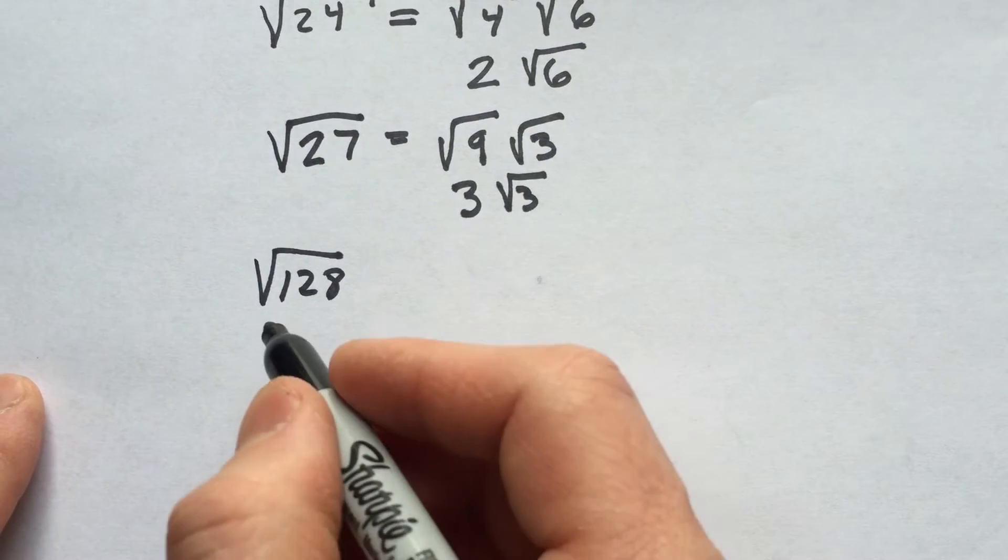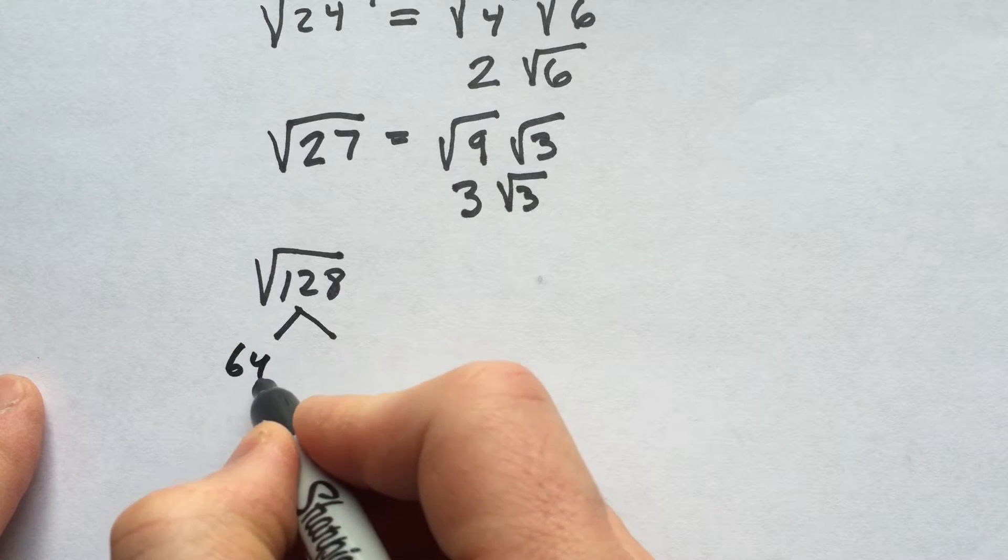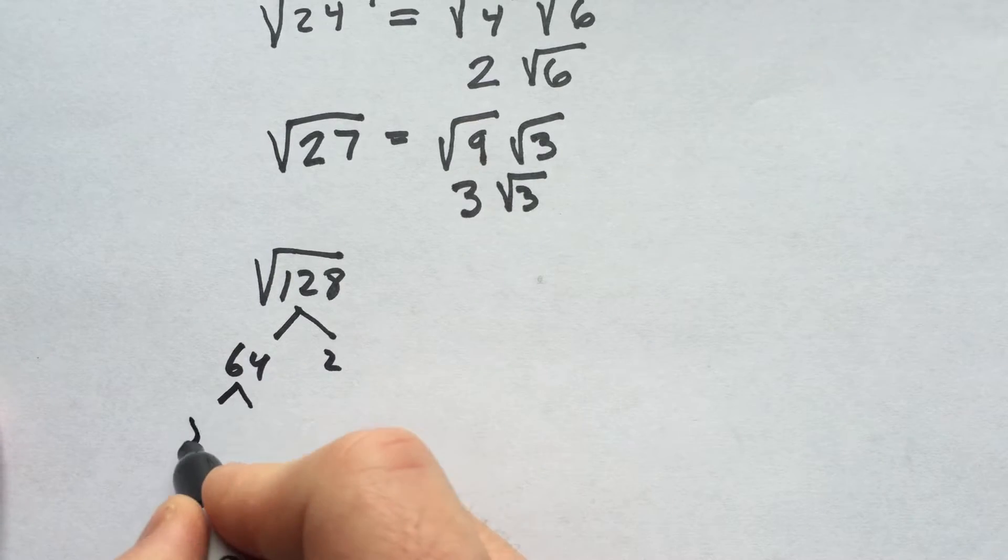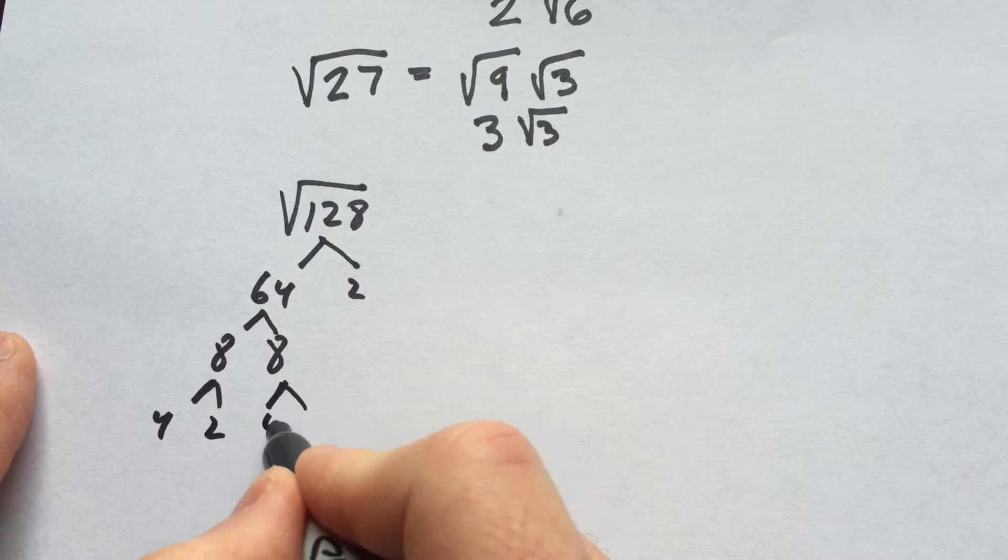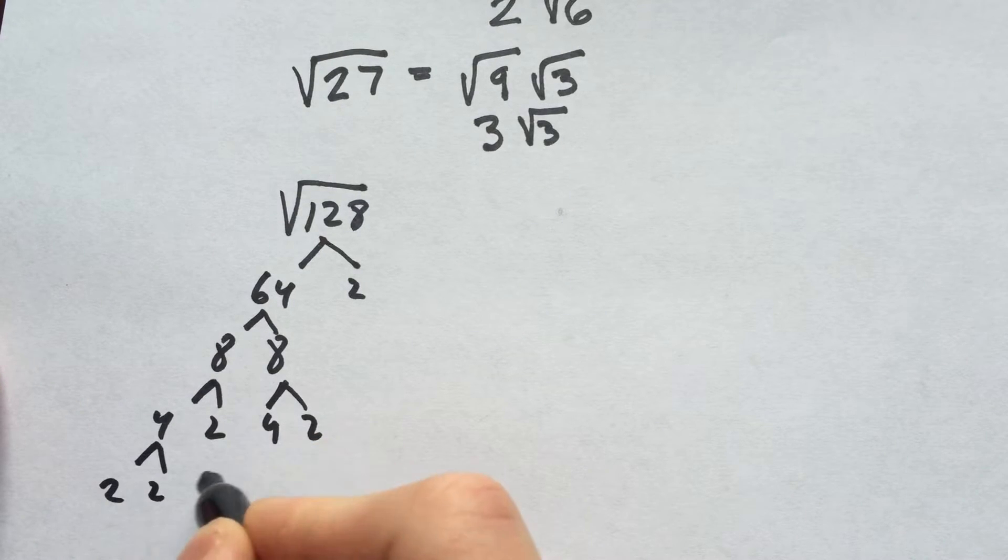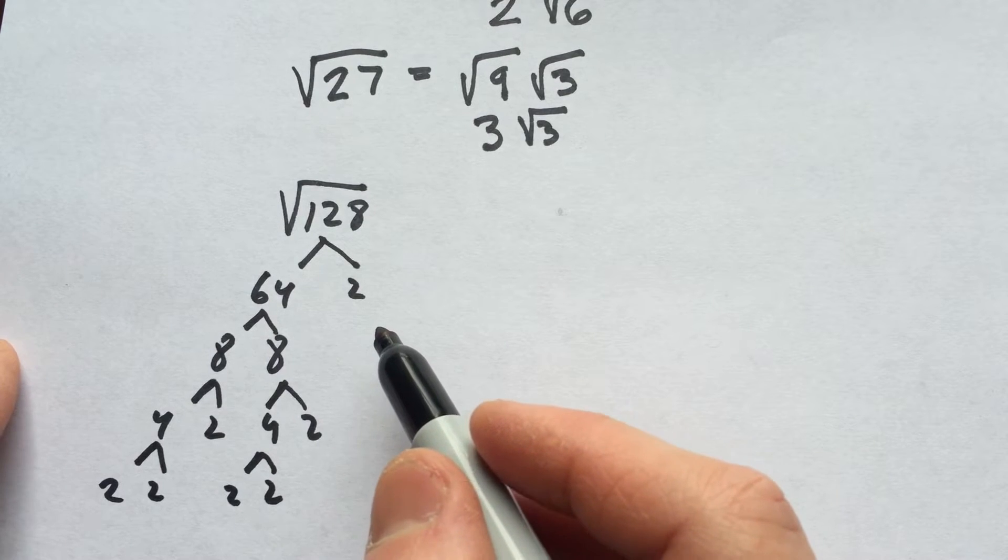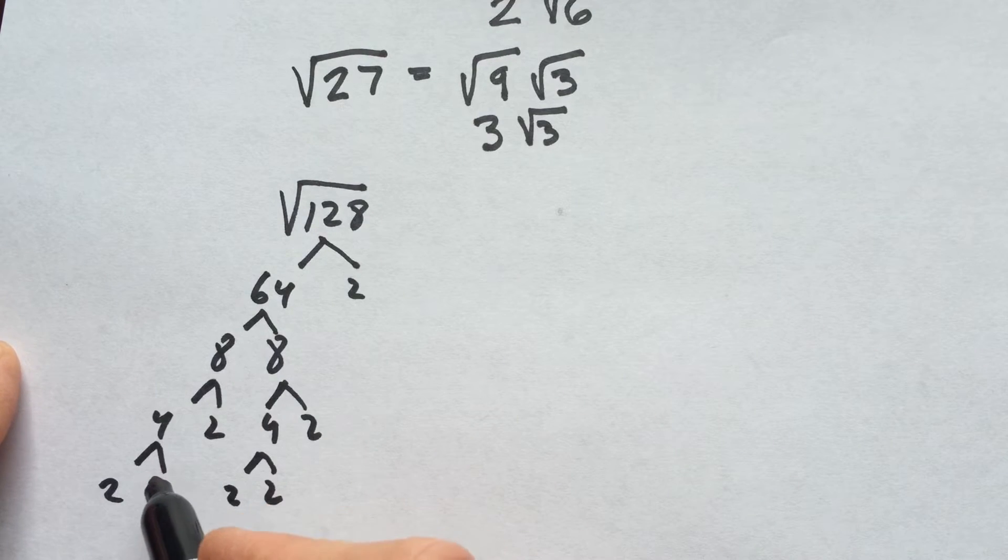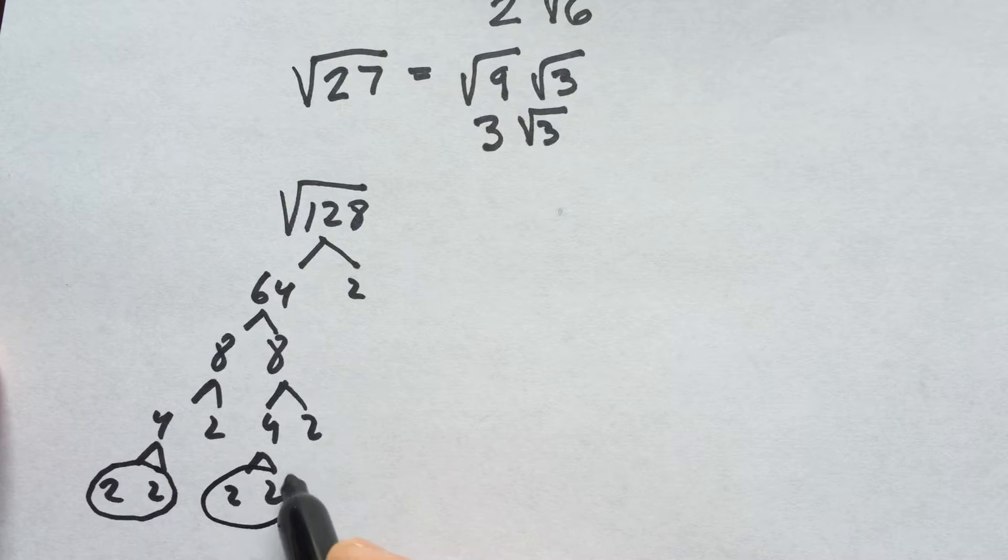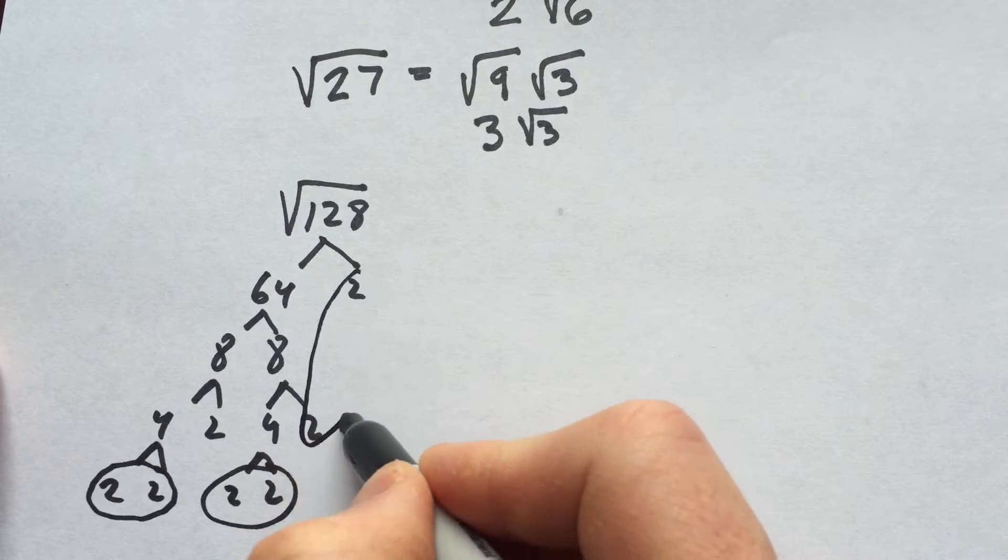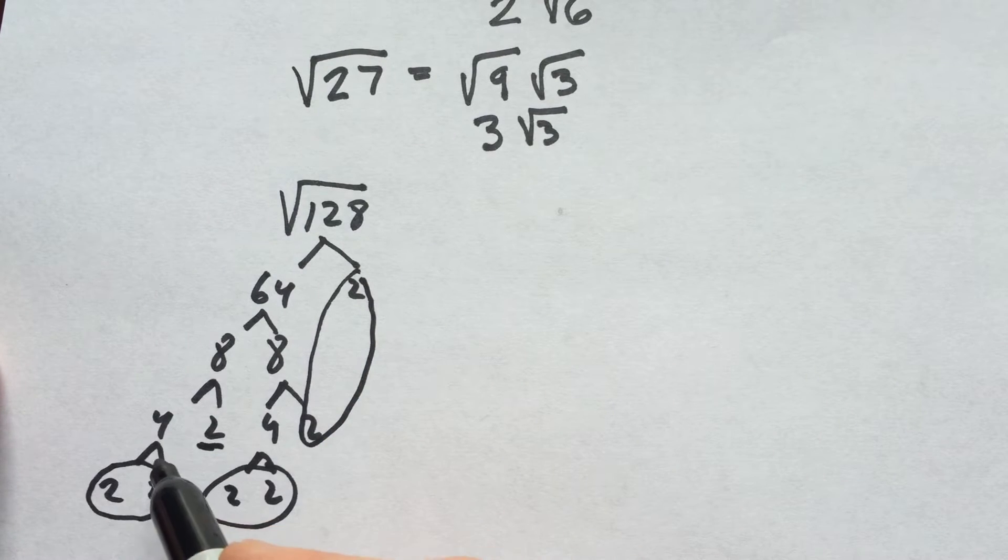So what I recommend oftentimes is just go ahead and break that number down. So we can see 64 times 2, 8 times 8, let's see, 4 times 2, 4 times 2. You just keep simplifying, and then what you do is you look for a pair, meaning like 2 of the same number. They don't have to be 2s, they just have to be the same number, but here's a pair of 2s, here's another pair, and here's another pair.